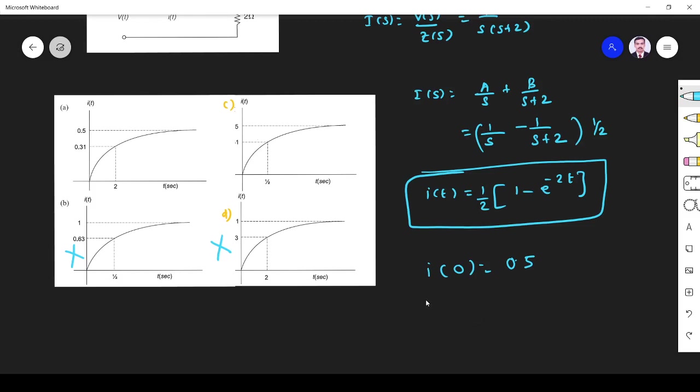Next, I(infinity), both are reaching 0.5. I(infinity) is 0.5 only. So what I do? Next you see I(2). T equals 2 is 0.31. T equals 1/2 is 1. So let us put I(1/2).